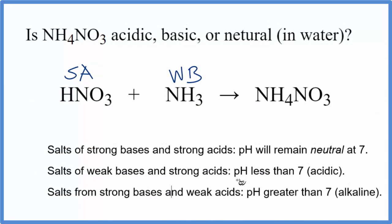So looking at our rules here, we're looking for a strong acid and a weak base. Here's a strong acid and a weak base. According to the rules, the pH will be less than 7, so this is going to be acidic.